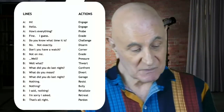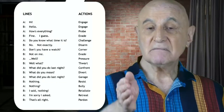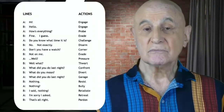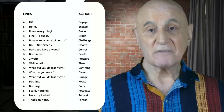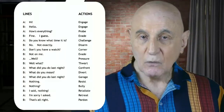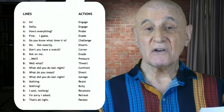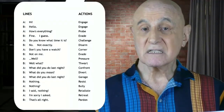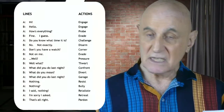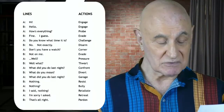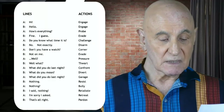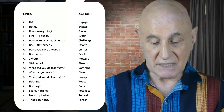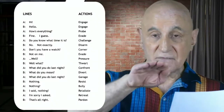When A says 'hi,' the action is simply to engage. And B meets A on A's level, says 'hello' — engages right back. 'How's everything?' could be a probe — trying to see what B will reveal. But B doesn't give anything away. B says 'fine, I guess.' That action is to evade the probe. 'Do you know what time it is?' — A is beginning to challenge. Still, B holds his or her ground: 'No, not exactly' — disarms the challenge. 'Don't you have a watch?' — A seems to be moving in, trying to corner B. But 'not on me' — B evades being cornered.